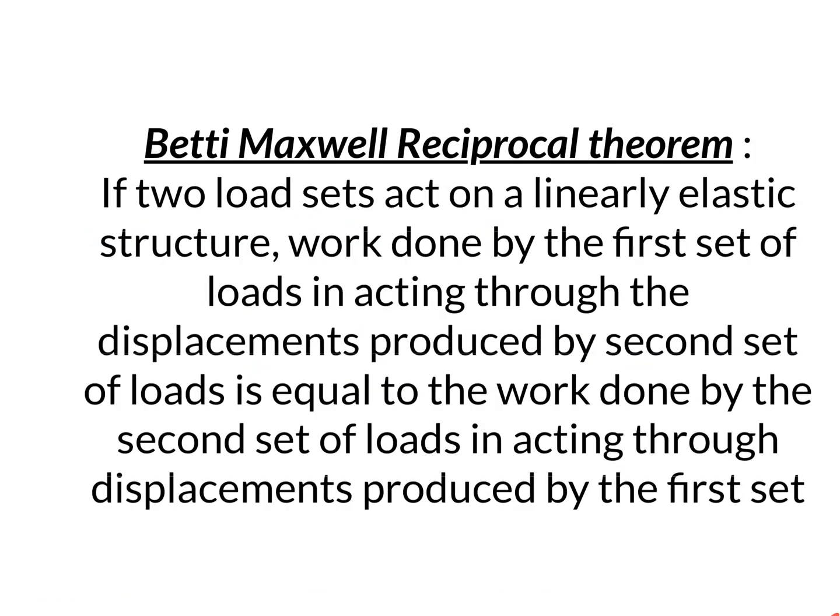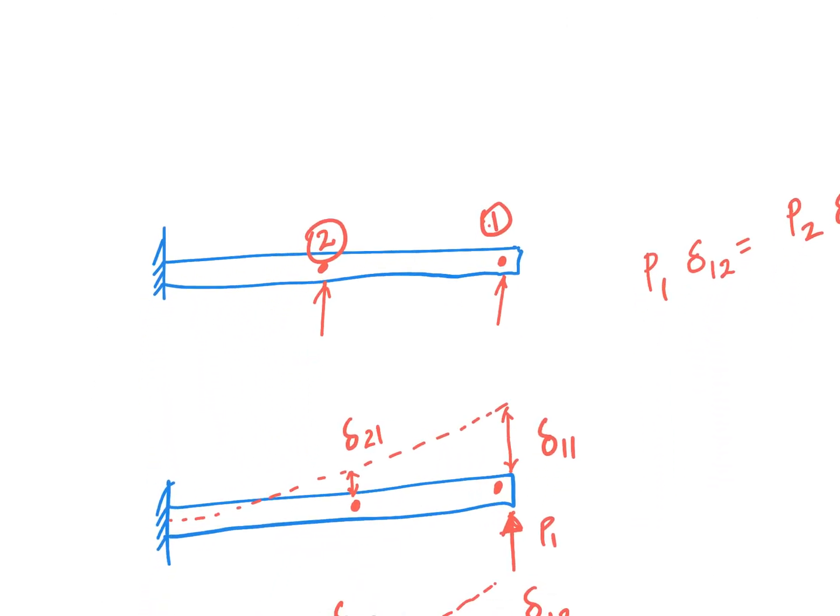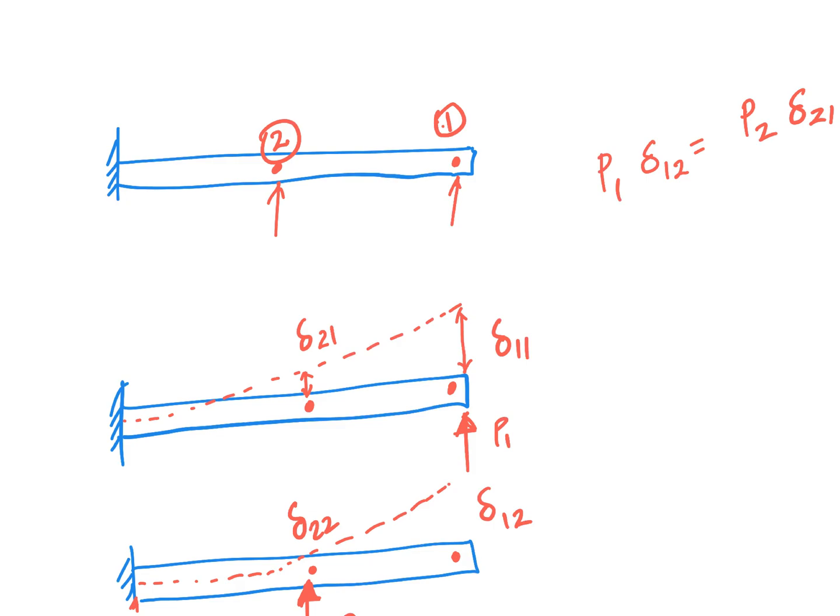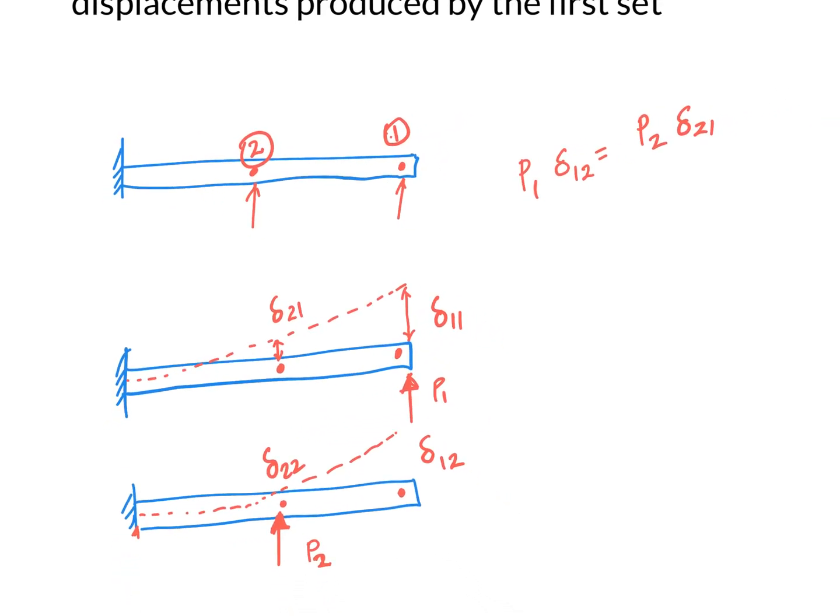Why is it symmetric? It is because of Maxwell-Betty reciprocal theorem which holds true for linear structures. If two load sets act on a linearly elastic structure, work done by the first set of loads acting through the displacements produced by the second set of loads is equal to the work done by second set of loads acting through the displacement produced by the first set. It may be difficult to understand. So let's take an example. Consider a cantilever as shown over here. There are two sets of loads. First set of loads is P1 alone. Second set of load is P2.